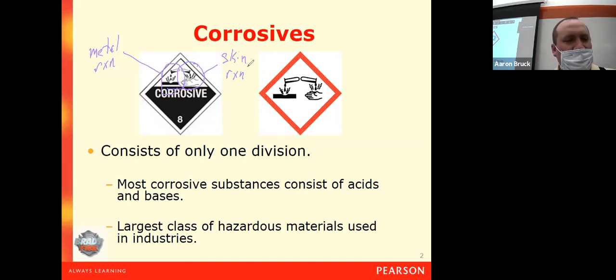There is only one division in corrosive materials. These are relatively simple in terms of chemical reaction. They do kind of the same things. But we also know that they are the largest class of hazardous materials. More substances industrially speaking and consumer-wise from your home have corrosive capabilities in the proper concentrations.